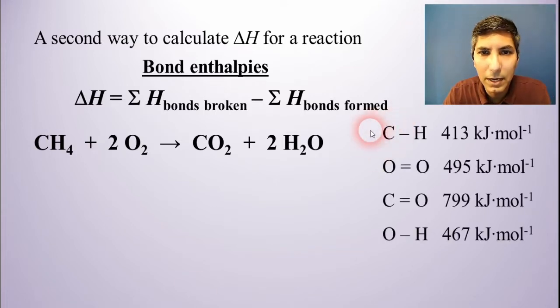Now we're being given a list of data here. These are the bond enthalpies for all the chemical bonds that are participating in this reaction. So using this data, we can calculate delta H.